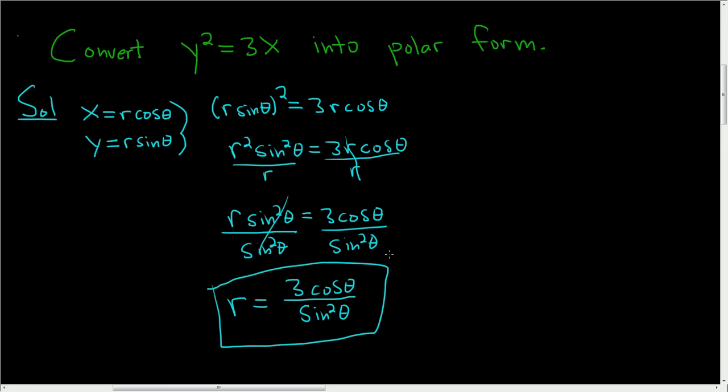You could simplify this further by writing it as 3 cos θ times 1/sin² θ. Using the fact that 1/sin θ is cosecant, this becomes 3 cos θ csc² θ, which is another acceptable answer.